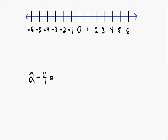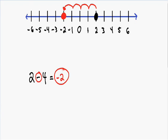We're starting with positive two — I'll circle in black where we're starting. We are subtracting four, which means we need to go to the left four units. Counting one, two, three, four, we finish at negative two. So two minus four is equal to negative two.